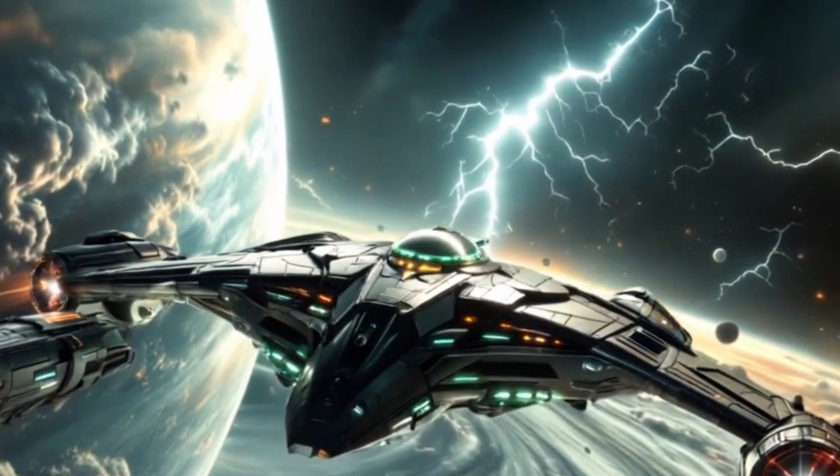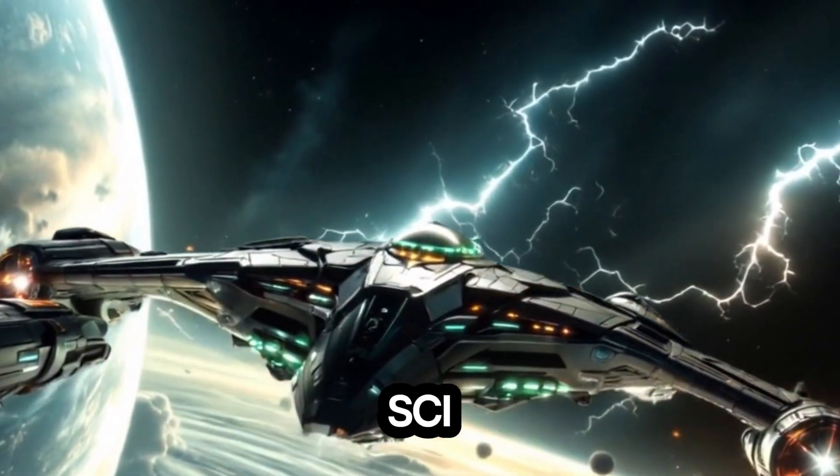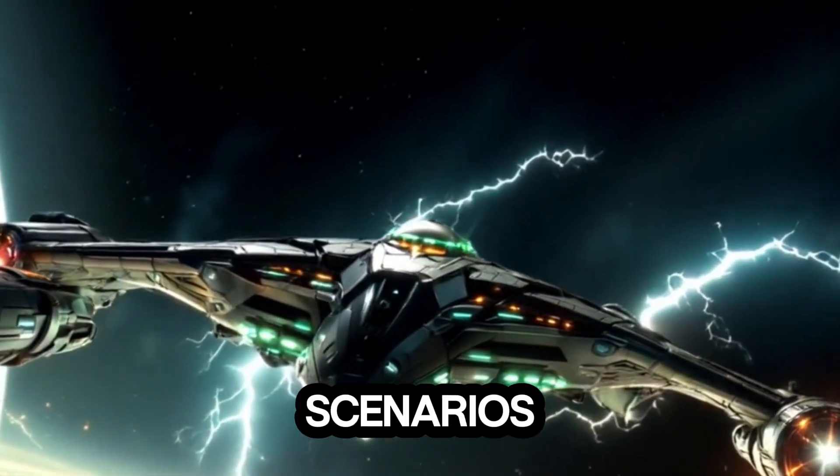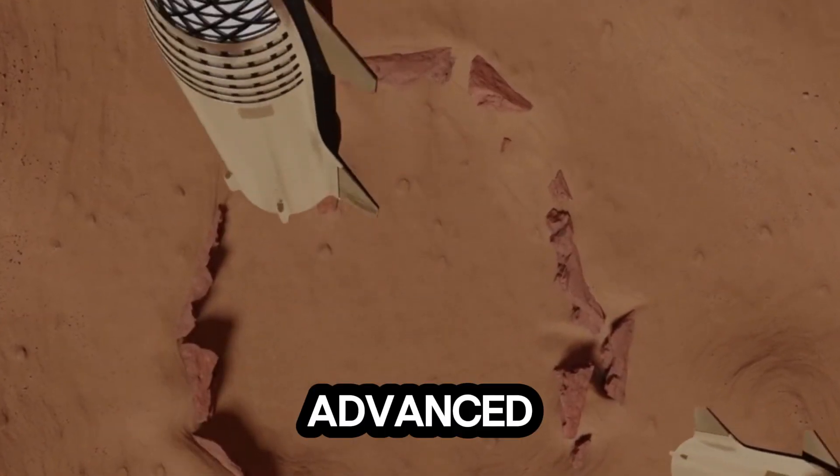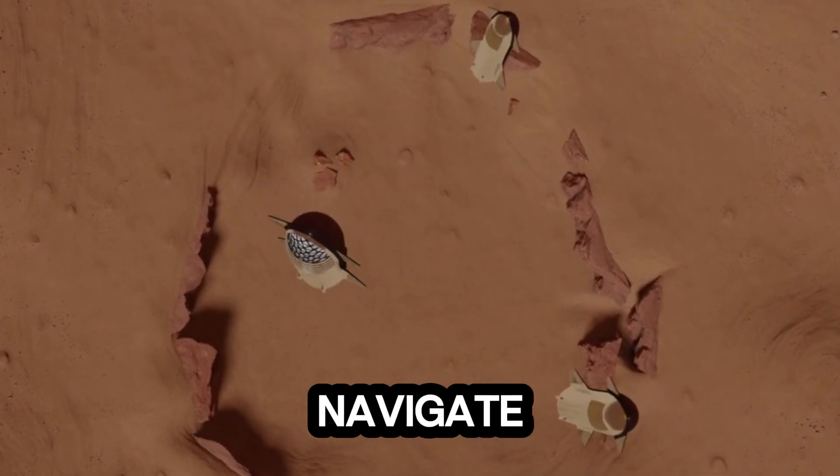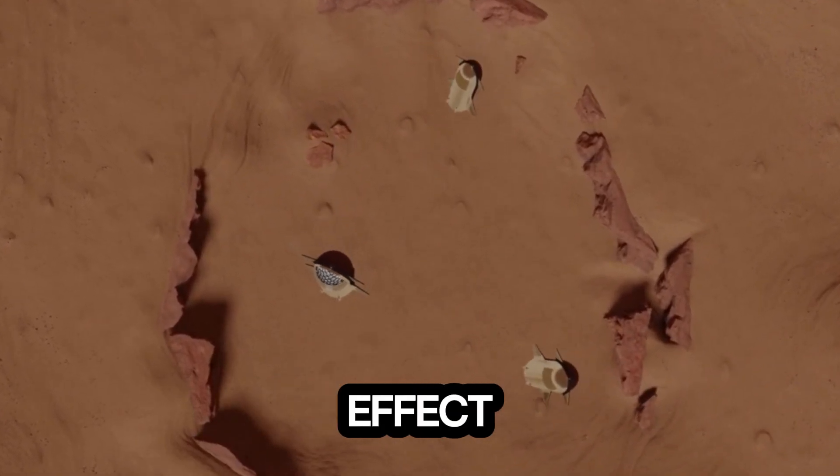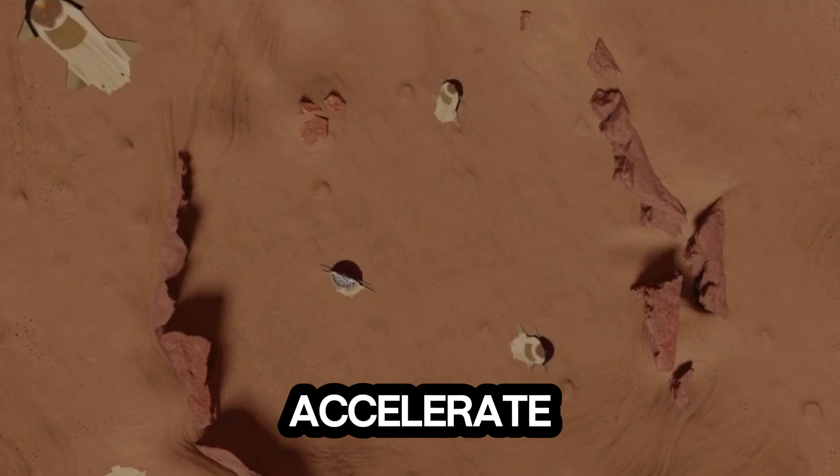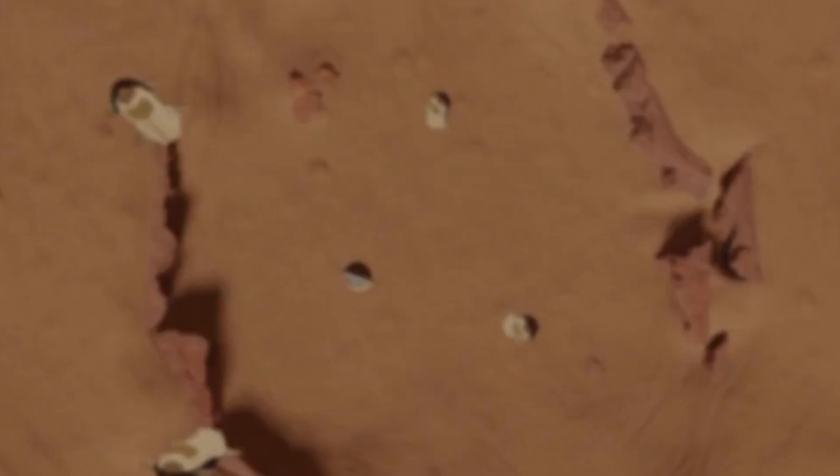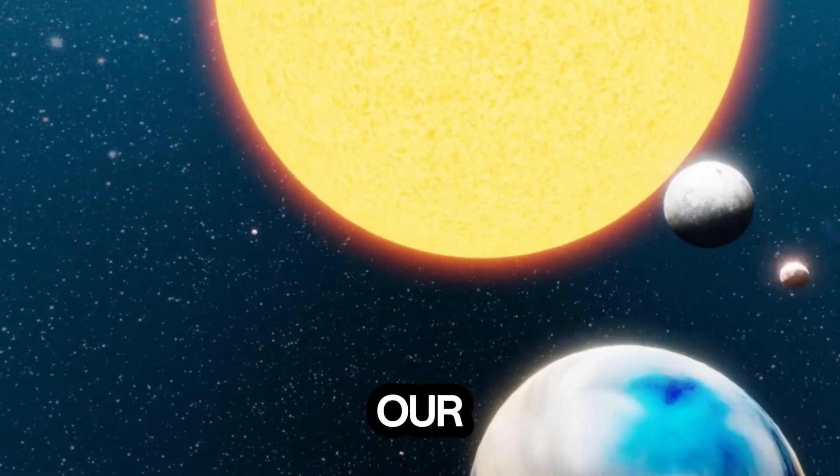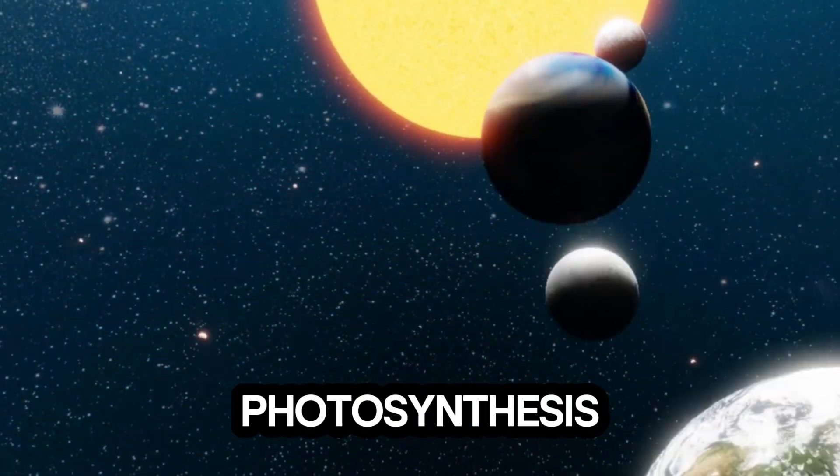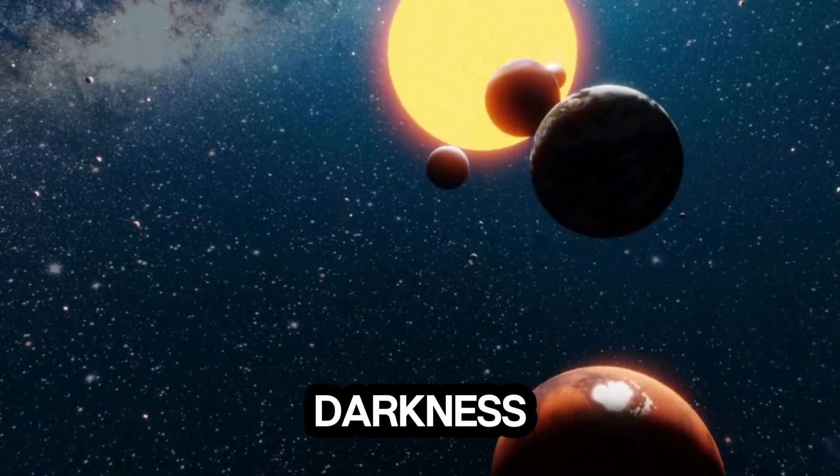Could we survive? While escaping Earth may seem like a sci-fi fantasy, some scenarios suggest humanity could establish bases on Mars or in distant space stations. Advanced spacecraft could attempt to navigate the gravitational slingshot effect, using the black hole's pull to accelerate toward new star systems. But the odds would be slim. And even if we survive, the loss of our sun would mean the end of photosynthesis, plunging remaining habitats into eternal darkness.